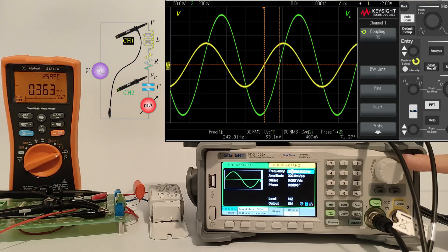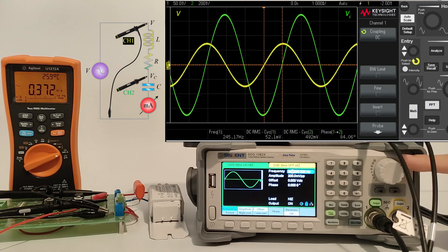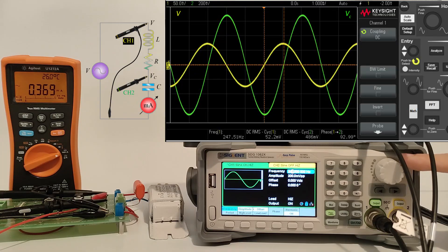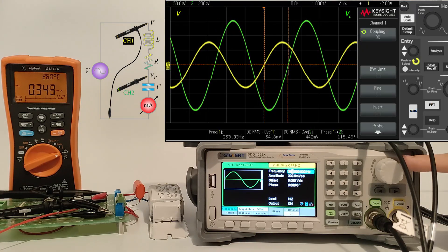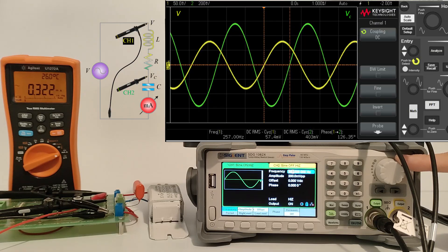We measure with a multimeter the RMS current value, and with an oscilloscope the supply voltage and the capacitor voltage. The instrument calculates the RMS value of the two voltages and the phase difference between them.